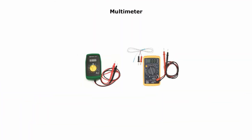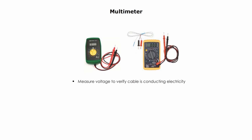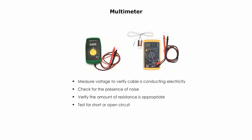Multimeter is a commonly used tool for electricity. It can measure voltage to verify a cable is conducting electricity, check for the presence of noise, verify the amount of resistance is appropriate, and test for short or open circuits in a wire.